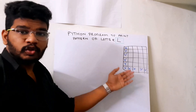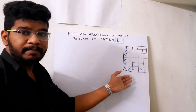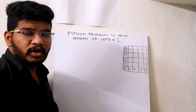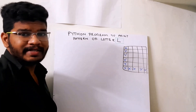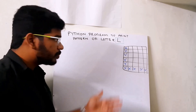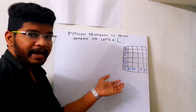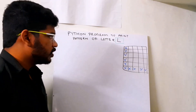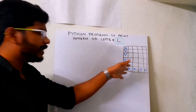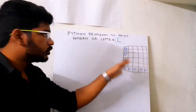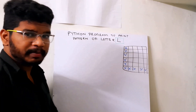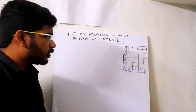Now let's get started with the pattern of letter L. This is the pattern I am going to print — this is the shape of L. As in all other programs, I will make conditions for stars and spaces. There are two conditions: the first column and the last row. In these two cases I'll print stars, and in all remaining cases I'll print spaces.